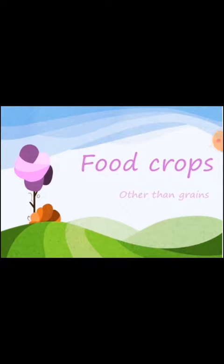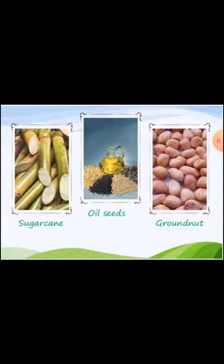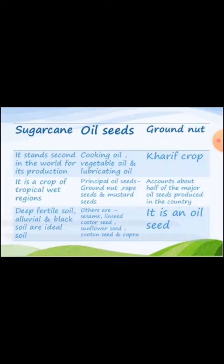Now we come to food crops other than grains. These are sugar cane, oil seeds, and ground nut. Sugar cane stands second in the world for its production. It is a crop for tropical wet regions. The soil requirement is deep fertile alluvial soil and black soil, which are ideal soils for sugar cane.